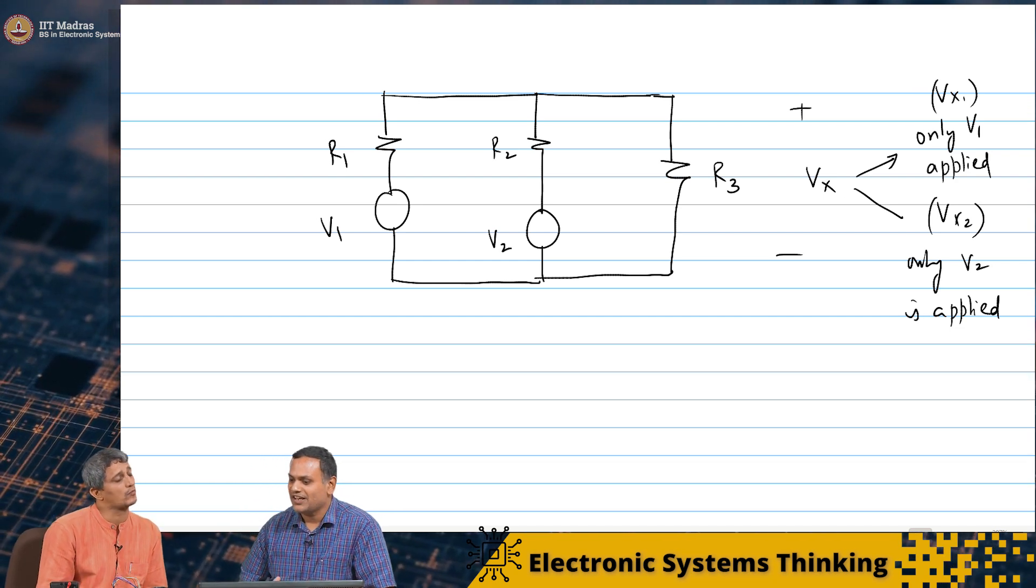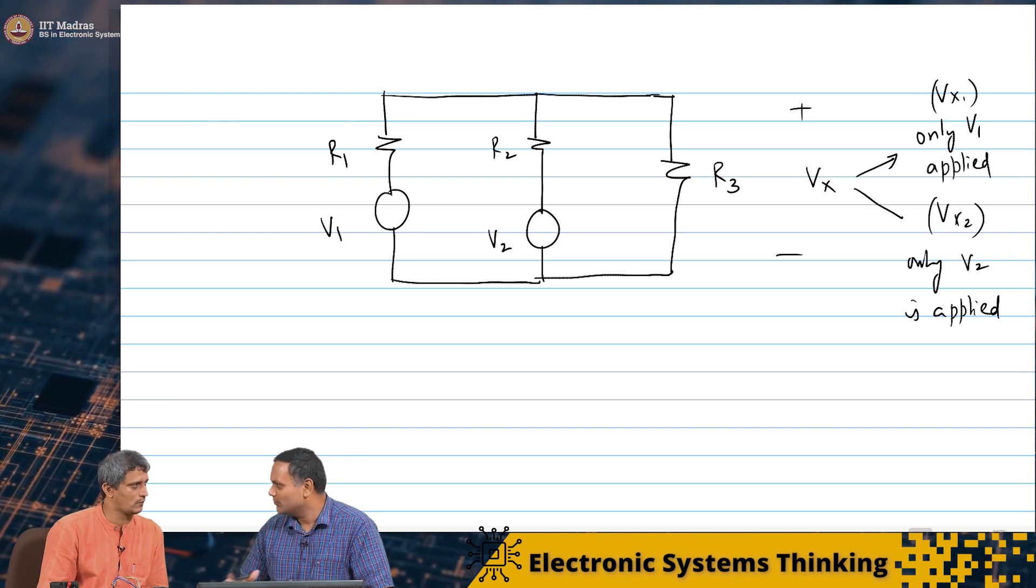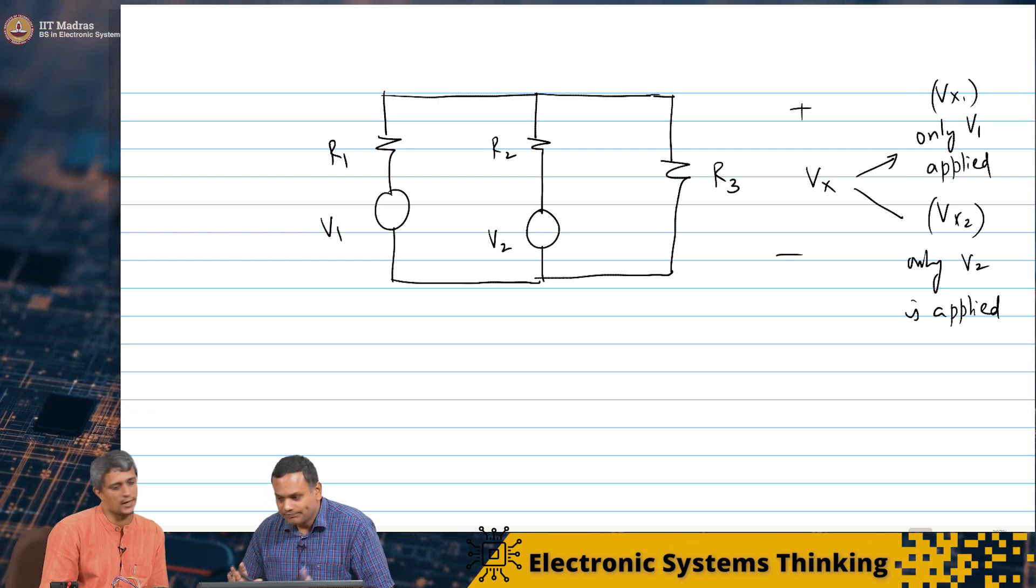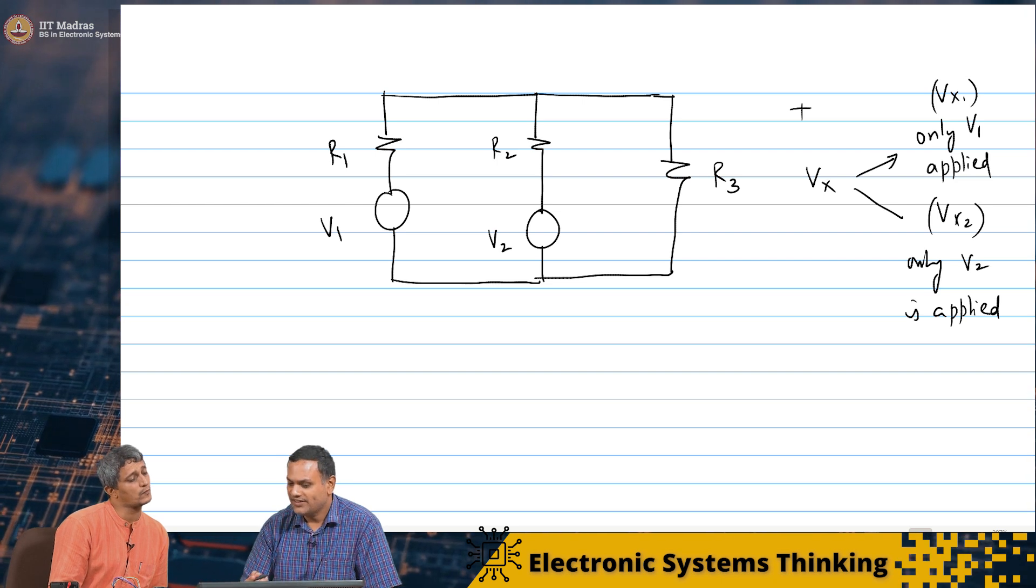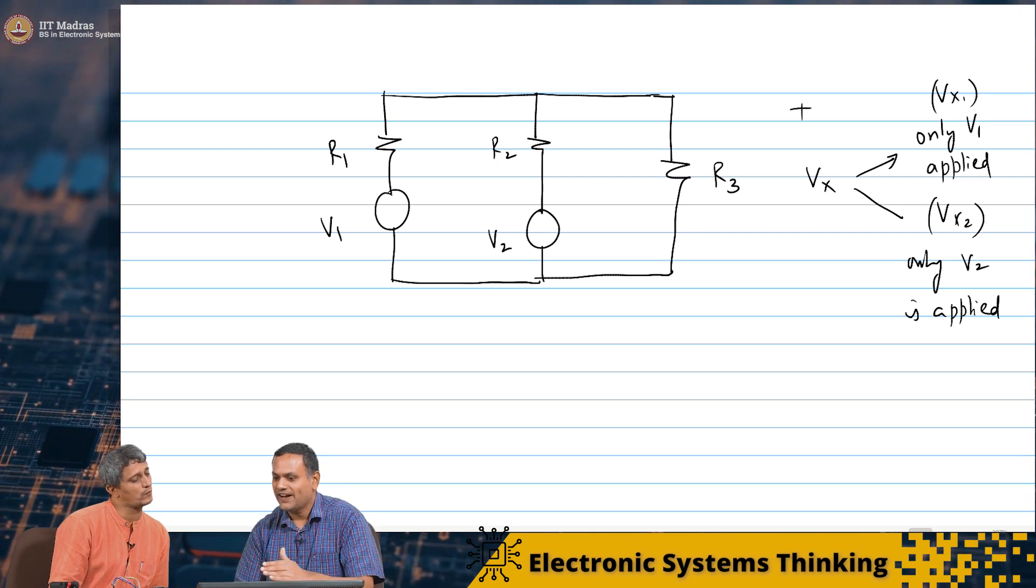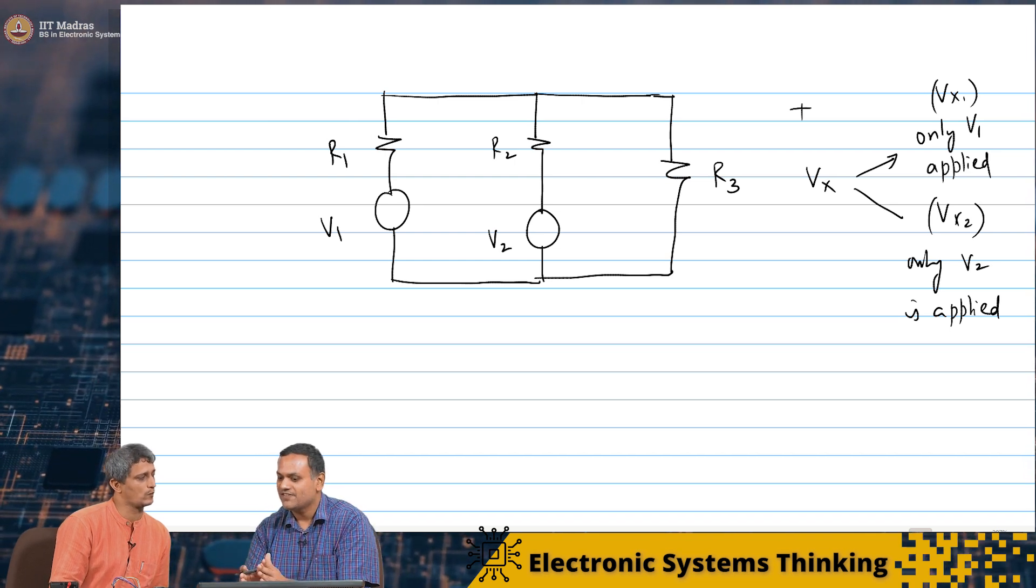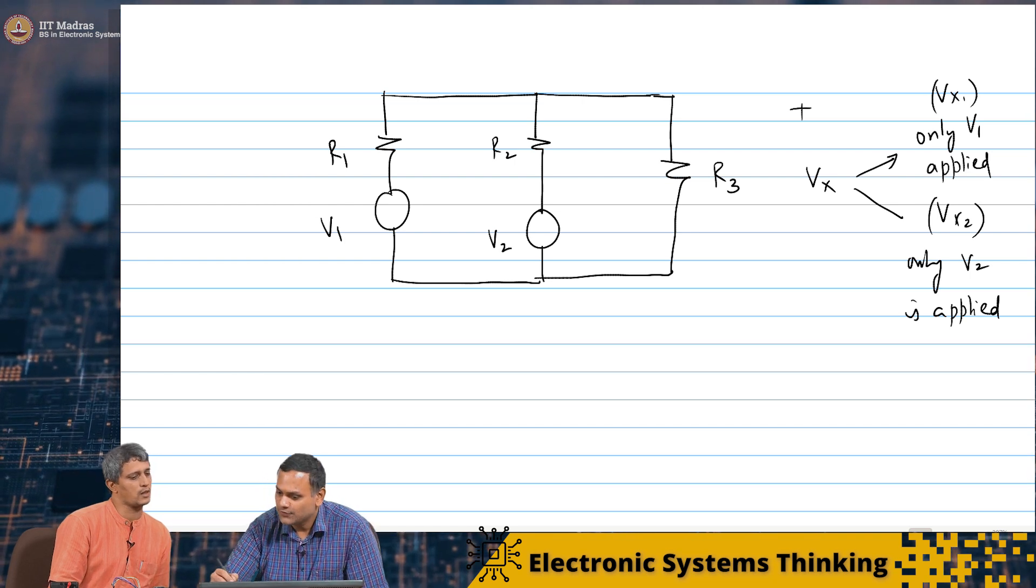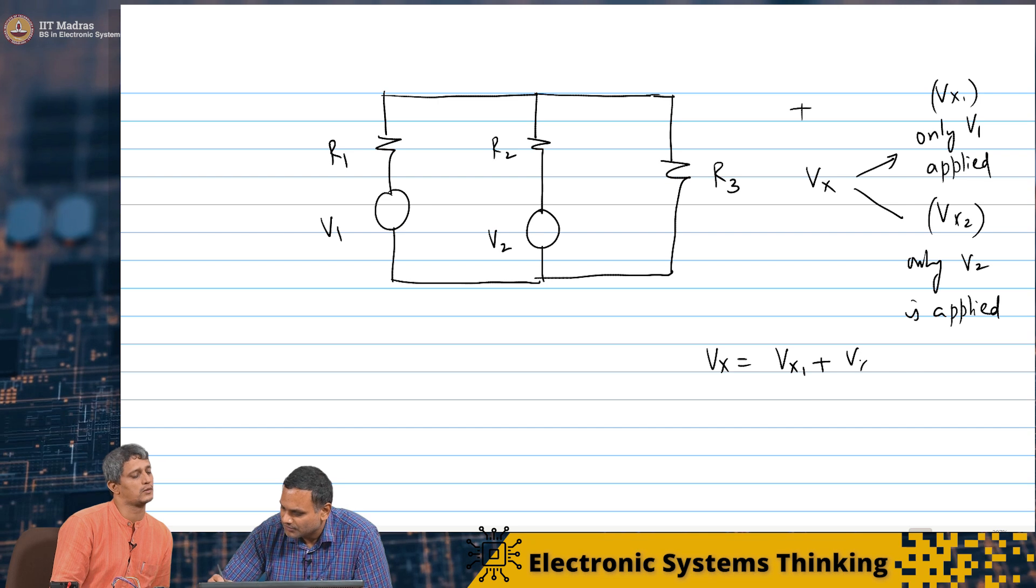So in fact, by definition, if you say that a voltage source is not existent or removed, you replace it with a 0 volt which is a wire. So if you do this, if you find out Vx1 and Vx2, the resultant voltage Vx when you apply V1 and V2 together will just be Vx equals Vx1 plus Vx2.